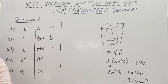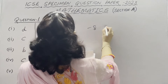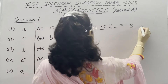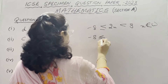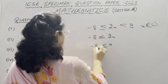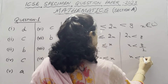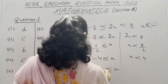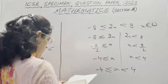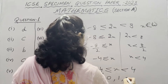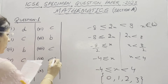In Part 9, the inequation is minus 8 less than or equal to 2x less than 8, where x belongs to whole numbers. Splitting: from minus 8 less than or equal to 2x, x is greater than or equal to minus 4; from 2x less than 8, x is less than 4. So minus 4 is less than or equal to x less than 4. Since whole numbers start from 0, the solution set contains 0, 1, 2 and 3. The correct option is C.